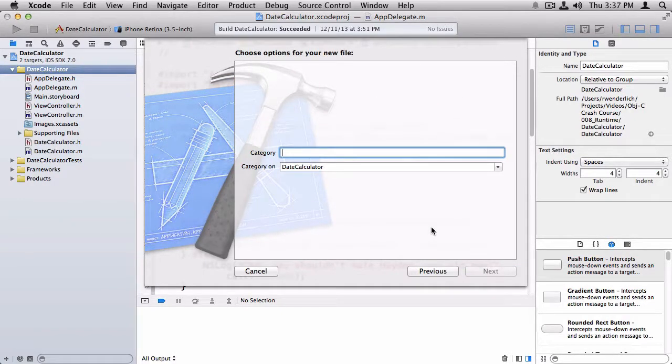And it asks me what do I want to name the category. We'll call this Logging Additions. And we want it to be a category on the date calculator object. So I'll just finish creating this.